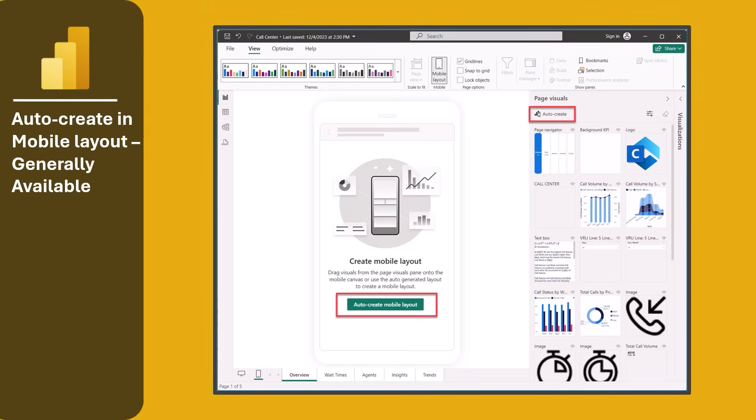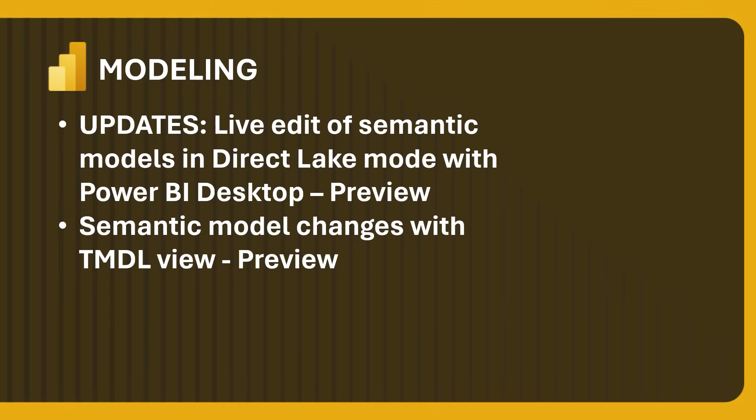The next update is auto-create for mobile layout, which is now generally available. Mobile-optimized report layouts are the best way to view data in the Power BI mobile app. When you switch to the mobile layout view in Power BI Desktop and the mobile canvas is empty, you can generate a mobile layout just by selecting the auto-create button. If people in your organization are using Power BI mobile on their phones, you should do this for all your reports — it makes viewing them so much better.